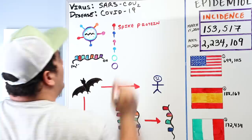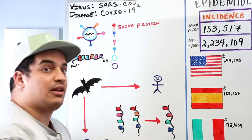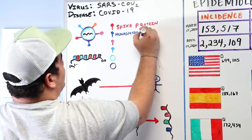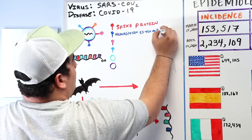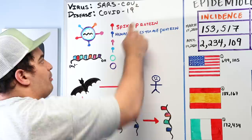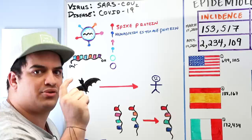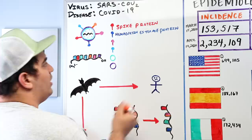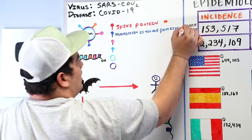Another significant surface protein involved in attaching, fusing, and infecting host cells is called hemagglutinin esterase protein. These two proteins are believed to be responsible for attaching to host cells that express ACE2 and fusing to push the virus into those cells.